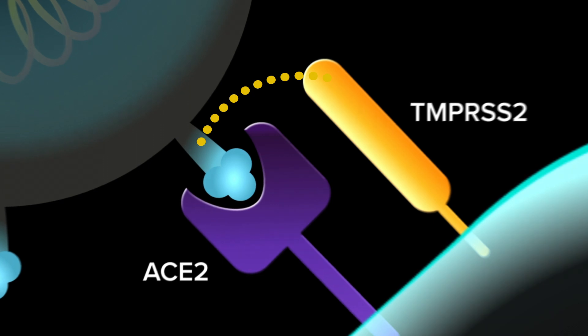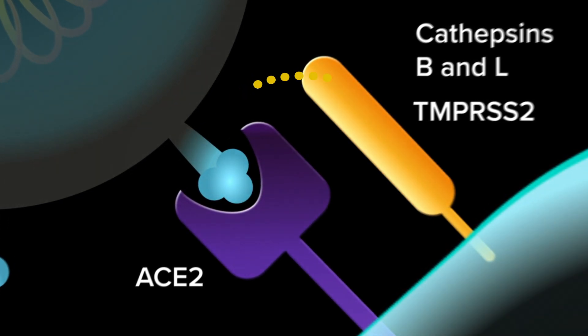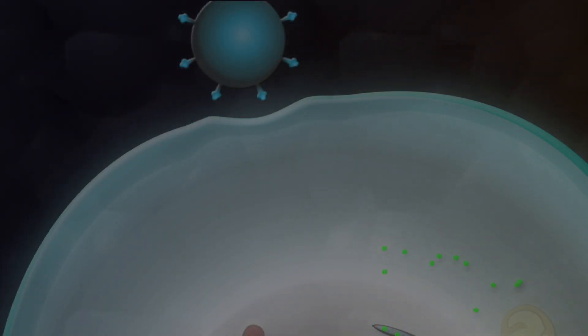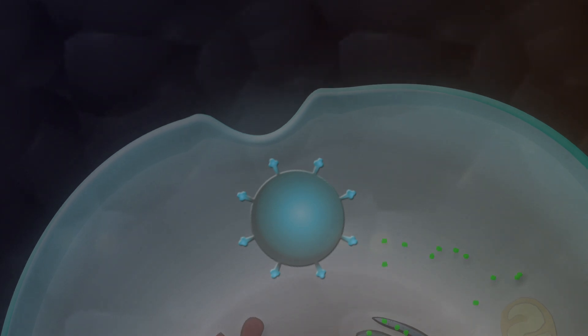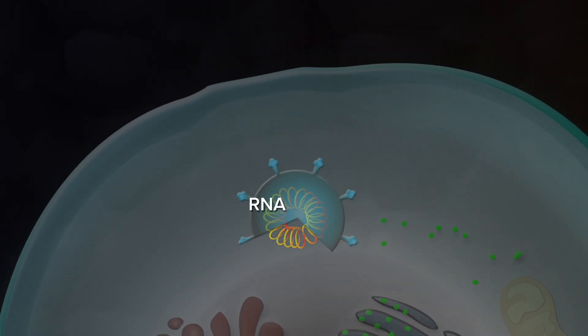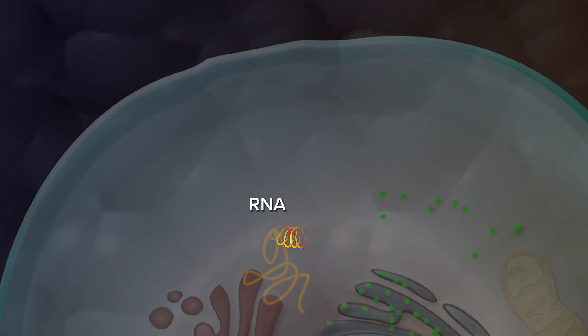The viral spike protein has to be primed by the host cell proteases TMPRSS2 and/or Cathepsins B and L for viral entry to occur. After binding of the primed spike protein to ACE2, the membrane of the virus fuses with the cell membrane and is able to release its viral RNA into the cell.